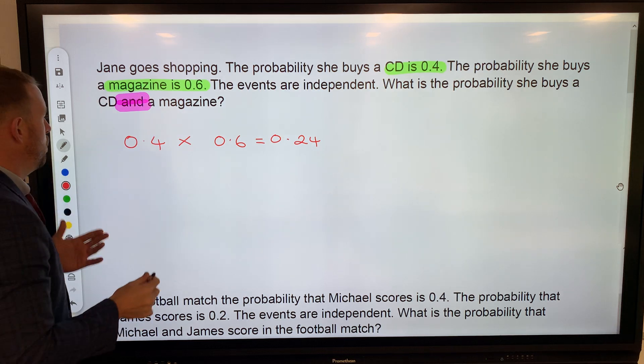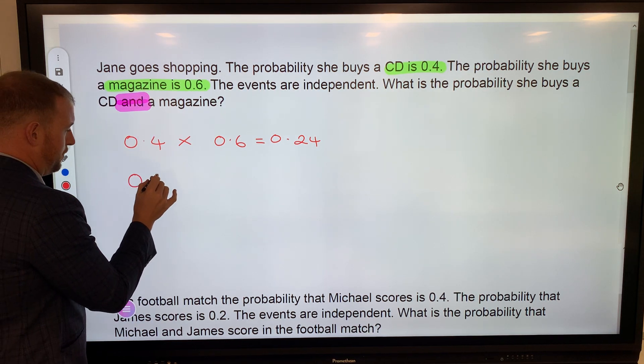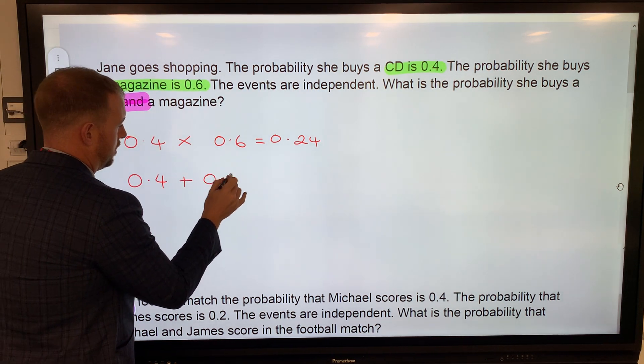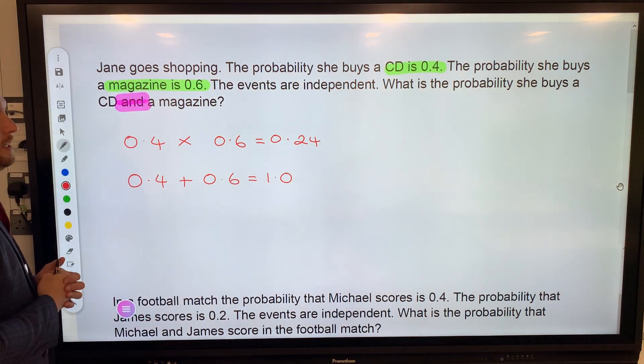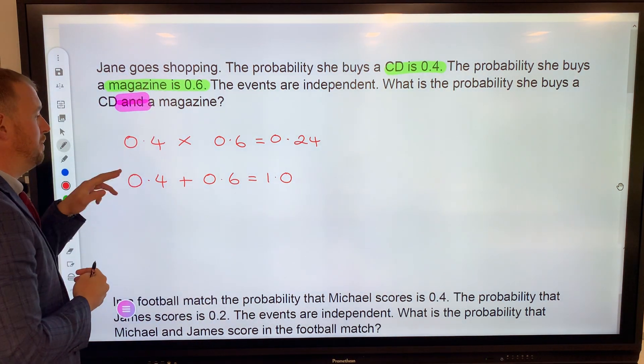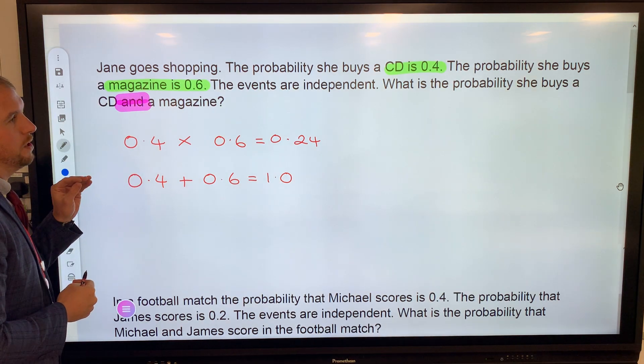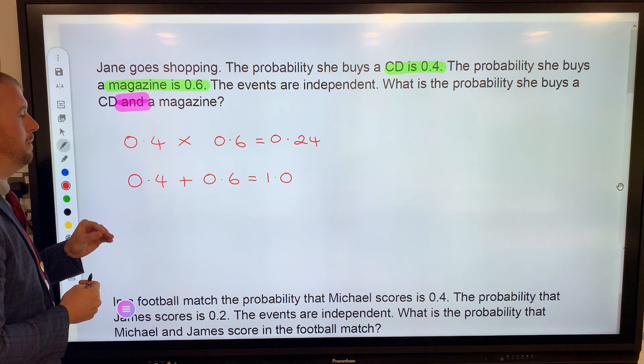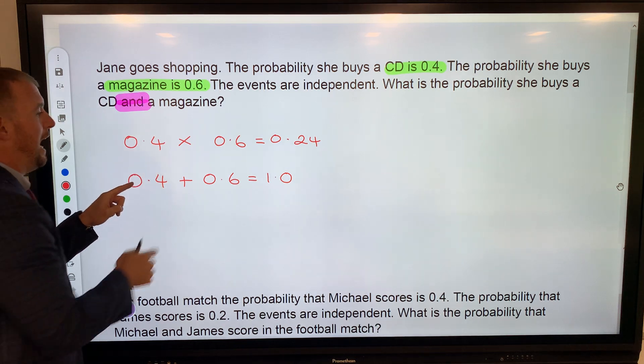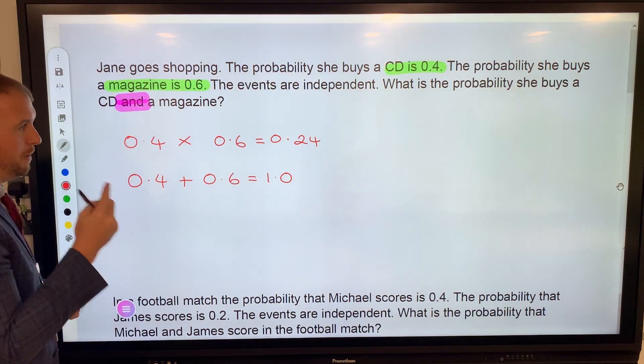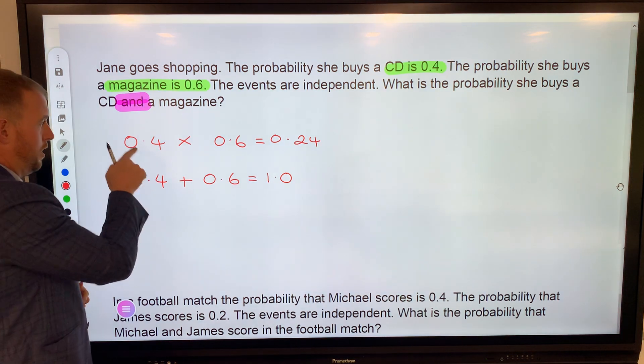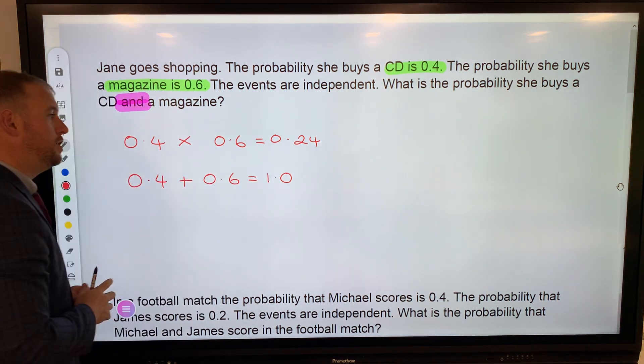We have to multiply—we do not add, because that would give us an answer of 1.0. If the probability of her buying a CD is 0.4, there's no way the probability of her buying a CD and a magazine can be certain. The probability that she buys both must be 0.24.